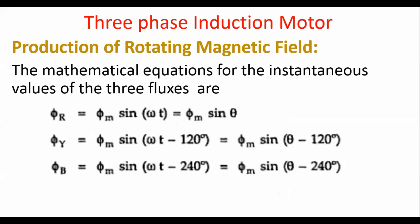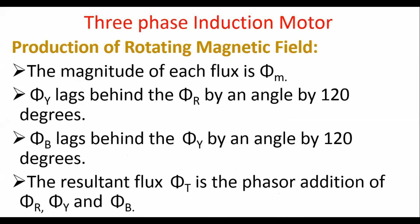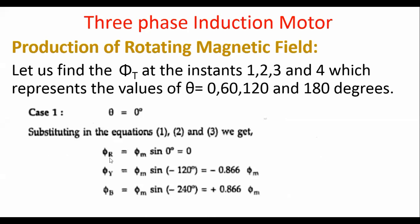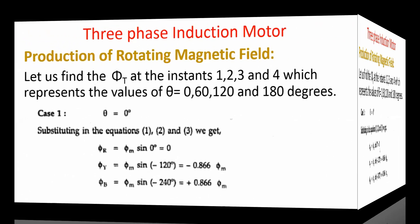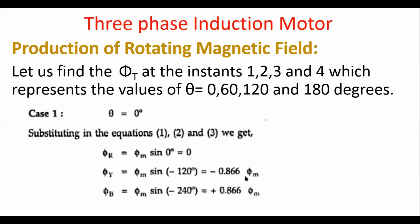Case 1: when θ = 0°, substituting into the equations gives φR = φm sin(0°) = 0; φY = φm sin(−120°) = −0.866 φm; and φB = φm sin(−240°) = +0.866 φm. So at θ = 0°, φR is zero — there is no flux in the R winding — and we have only φY (negative) and φB (positive).